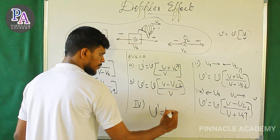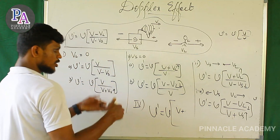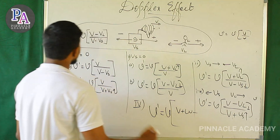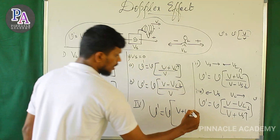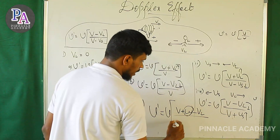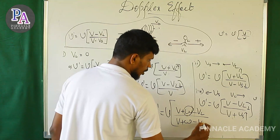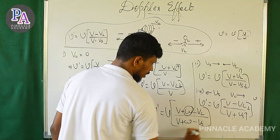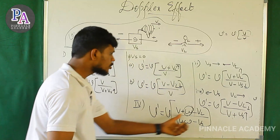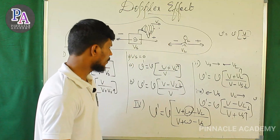If the sound is affected by wind, the Doppler effect equation is also affected. New-dash equals new into (V plus w minus VL) divided by (V plus w minus Vs), where w is the wind velocity. The wind modifies the effective velocity of sound in the equation.